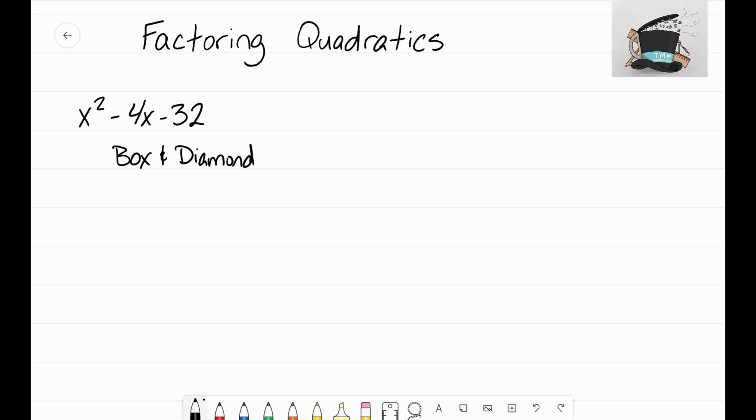What we're going to use is a generic rectangle with a diamond problem, and if we use both of these tools into one process, it'll help us factor this quadratic. So first things first, we need to draw out our box, or sometimes we refer to it as our generic rectangle, and then off to the side here I'm going to draw an X for my diamond problem.